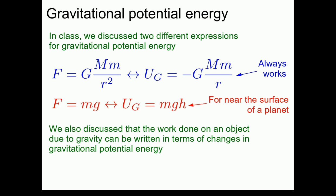We also discussed that the work done on an object due to gravity can be written in terms of the changes in the gravitational potential energy. Or written mathematically, the work done by the force of gravity is equal to minus delta U.